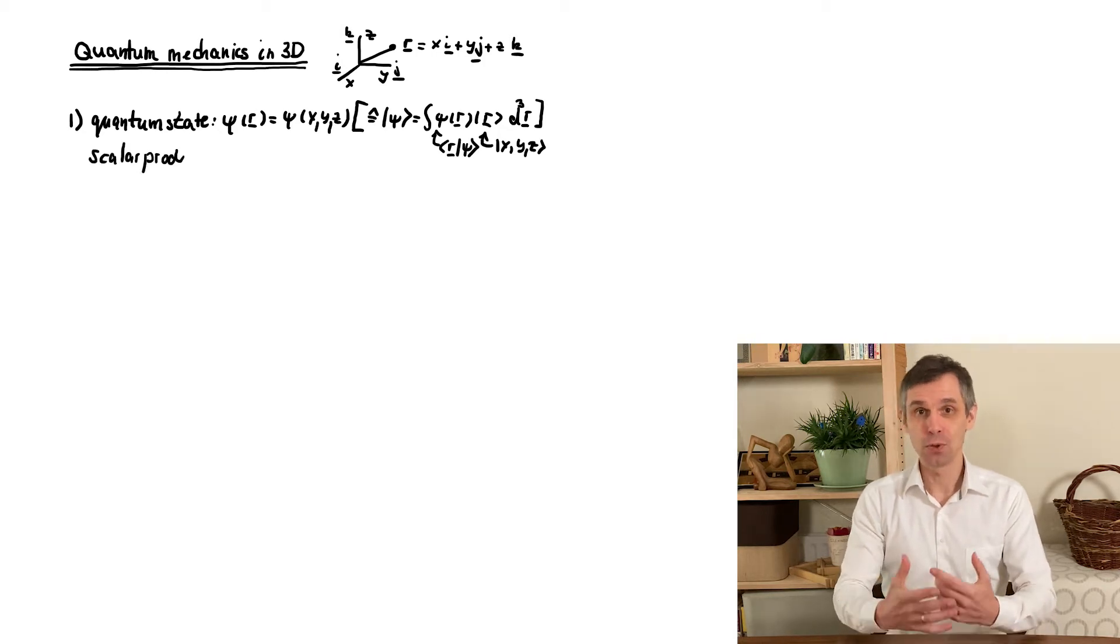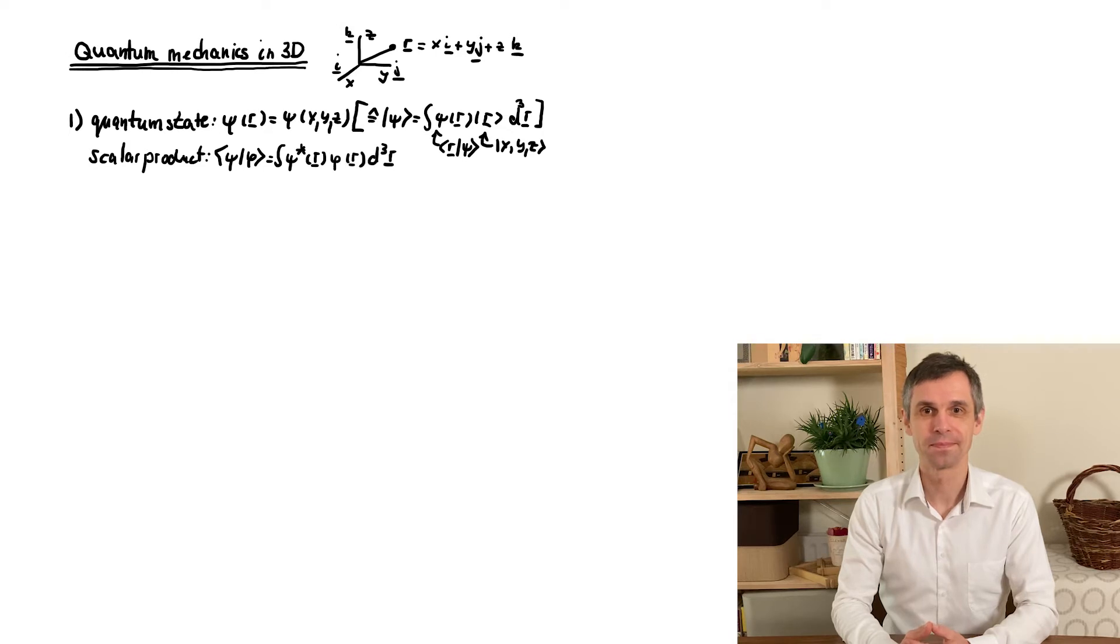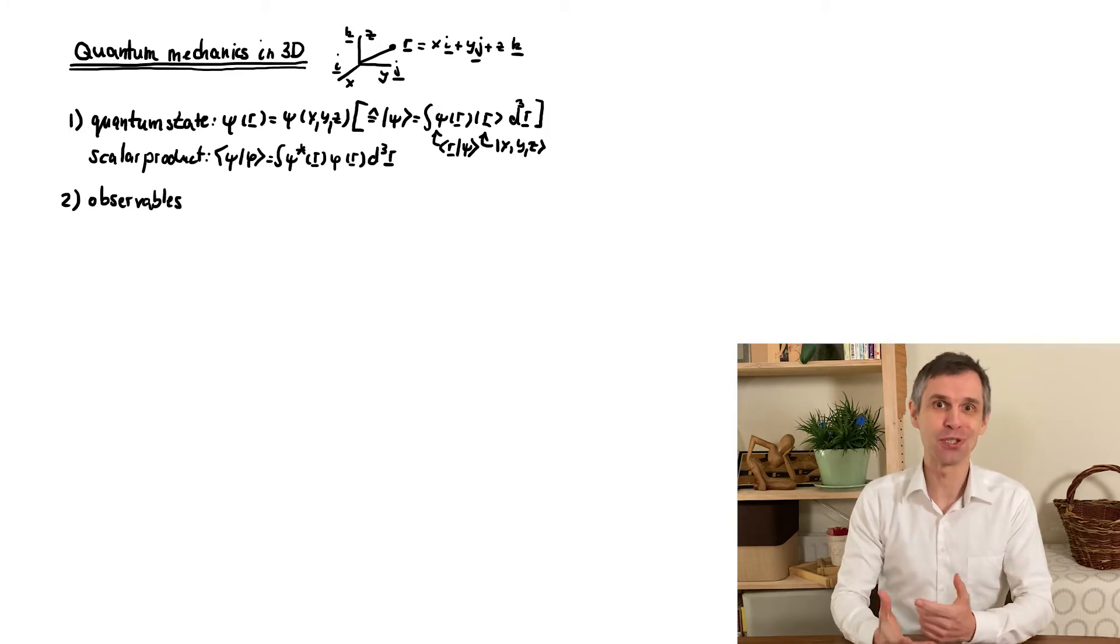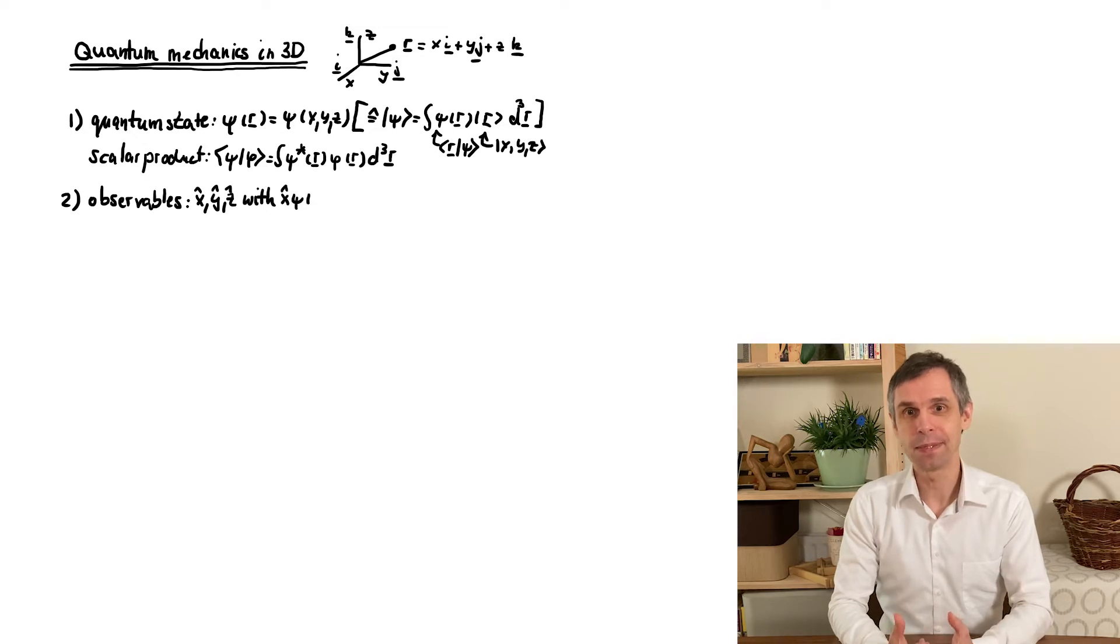And we introduce a scalar product, which is the straightforward extension of the one-dimensional case. Now, this is already tied to our three position observables, which hence act on the wave function in a very natural way by multiplying it by the corresponding coordinate.